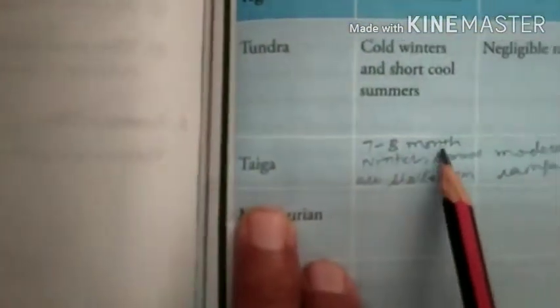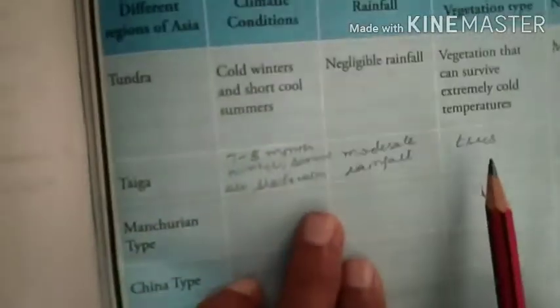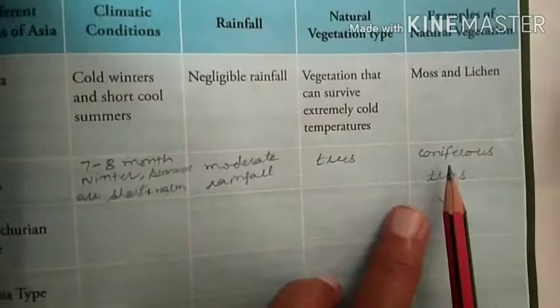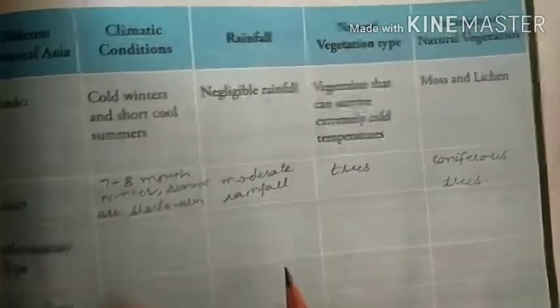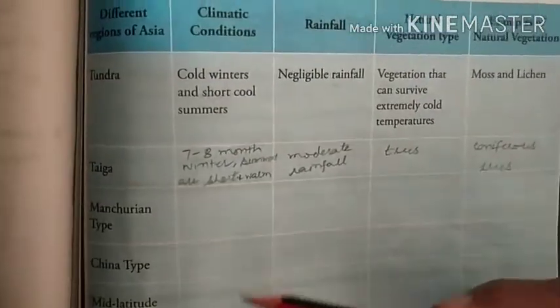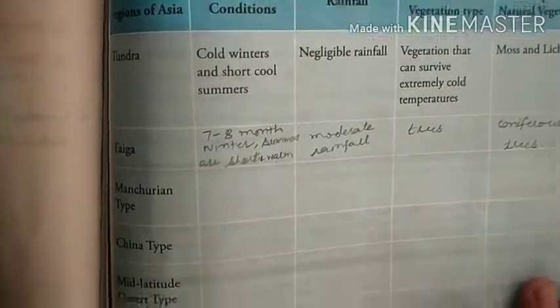Now the second one I have done for you: Taiga — 7 to 8 months winter, summer is short and warm, and moderate rainfall. What type of natural vegetation? Trees in the form of conifers trees — conifer forests. Example of natural vegetation: conifers trees. Manchurian is also the same. Like this, the whole table you must complete.